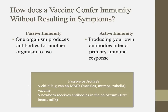Where do we get our immunity from? There are two basic types. Passive immunity is when one organism produces antibodies for another organism to use — like trading antibodies on the black market. Active immunity is producing your own antibodies, but to do that you have to experience a primary immune response.